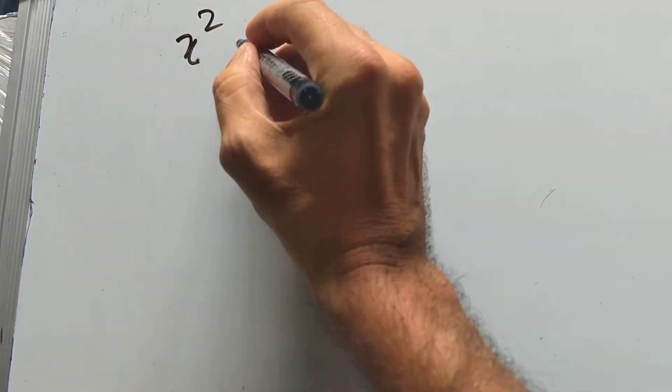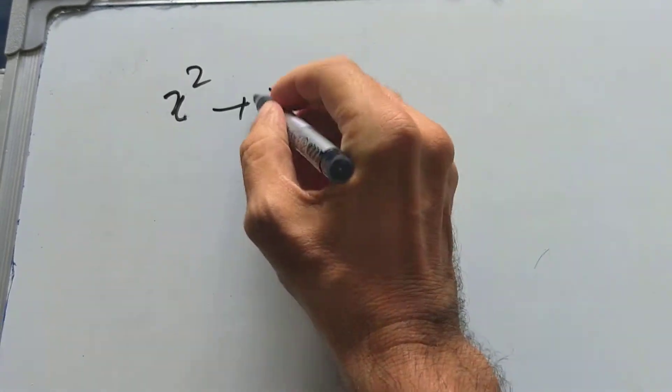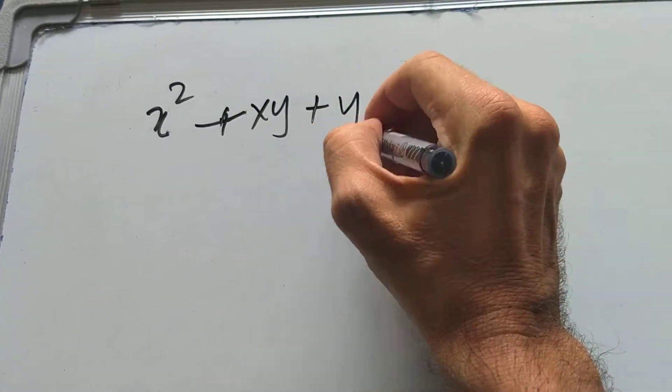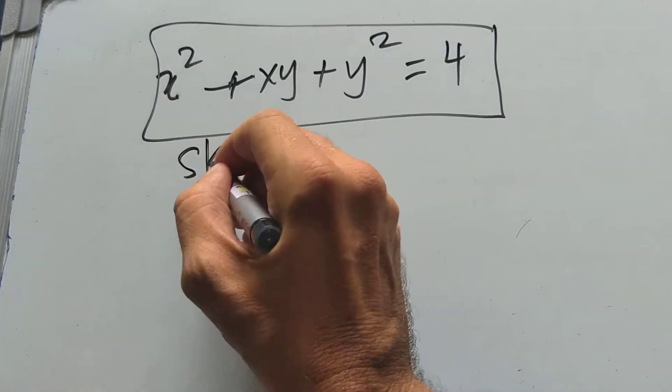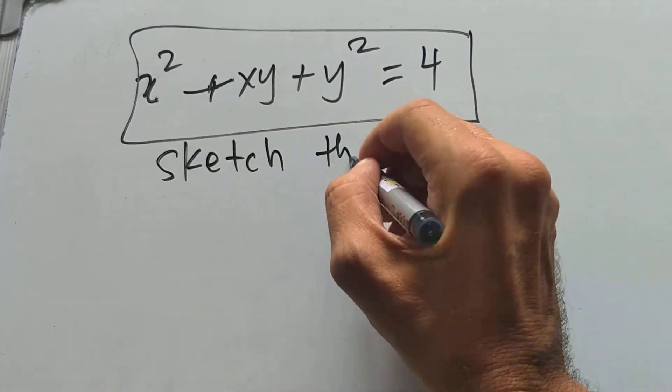Alright, let's plot this. x squared plus xy plus y squared is 4. Our job is to sketch this curve.